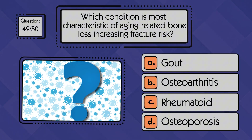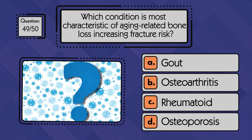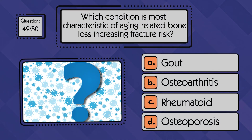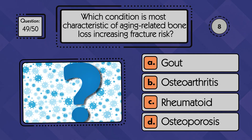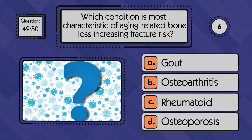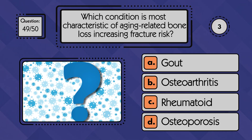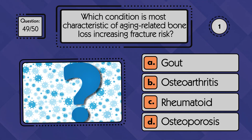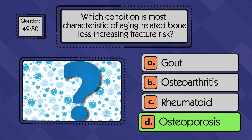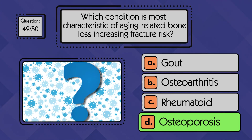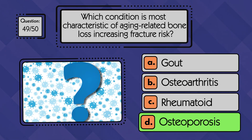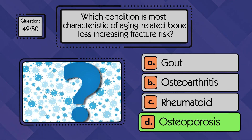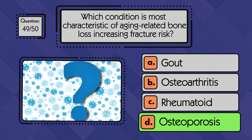Which condition is most characteristic of aging-related bone loss increasing fracture risk? Osteoporosis is the condition most commonly associated with decreased bone density and a higher risk of fractures as people age.